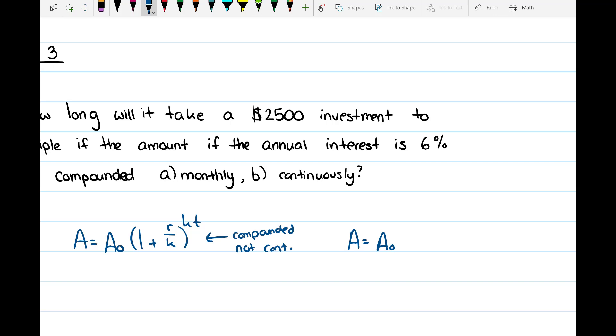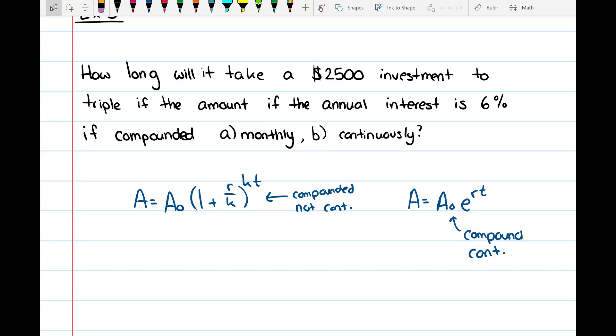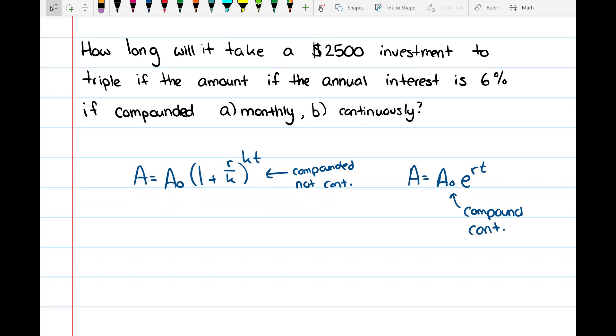And the formula to compound continuously is A equals A₀ times e to the rt. So this formula is if you're gonna compound continuously.